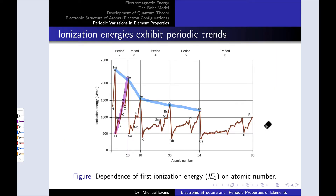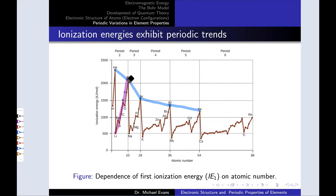Let's look at the periodic trends on a graph of ionization energy as a function of atomic number. We can see the trend moving down a group if we look at the noble gases — helium, neon, argon, krypton, xenon — ionization energy is decreasing as we move down the group. But within each period, moving for example from lithium to neon in the second period, ionization energy increases as we move left to right across the periodic table.